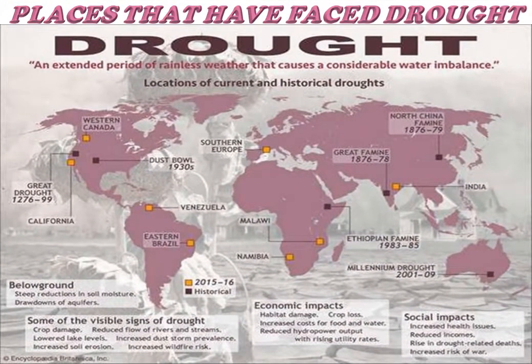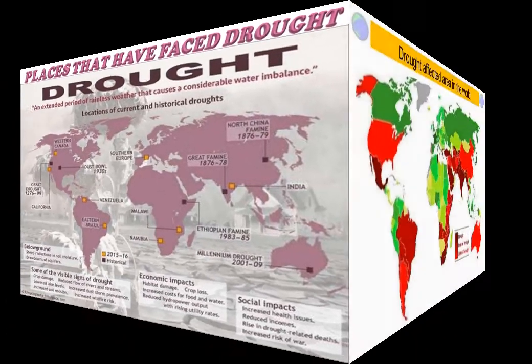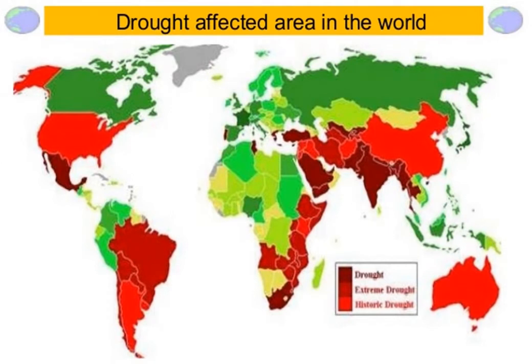This map shows places that have faced drought — the locations of current and historical droughts. Drought-affected areas in the world include North and South America, Australia, East, South, and Middle East Asia, and East, South, and North Africa.